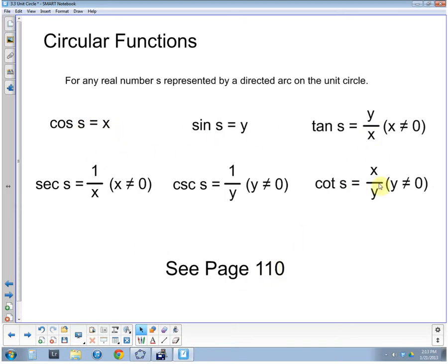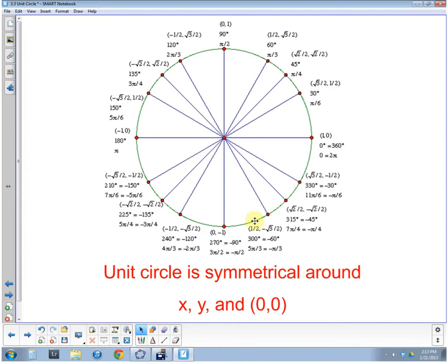The problems we're going to run into are when we divide by zero on these different functions, the tangent, the cotangent, cosecant, and secant. So let's take a look at the unit circle. Unit circle, we've seen before.